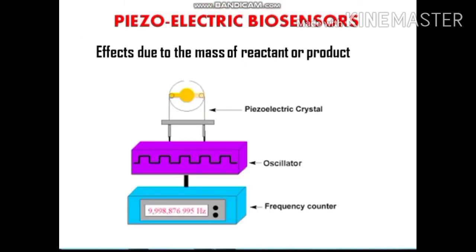The piezoelectric biosensor works on the principle that whenever mechanical stress is produced over a piezoelectric crystal due to mass changes, it creates impulses in that crystal. The piezoelectric crystal oscillates at a particular frequency. When it absorbs target molecules, there is a mass change, causing the overall frequency to change. This frequency change is directly proportional to the target component concentration, allowing us to determine the amount of target present in the sample.